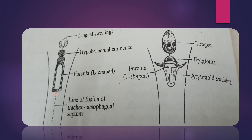In the development of the larynx, the inverted U-shaped furcula plays a major role. This inverted U-shaped slit-like structure lies in the floor of the pharynx. Towards the cephalic end, a prominence can be seen — that is the hypobronchial eminence, which is derived from the fourth arch. On either side of this furcula, two lateral folds are getting into array, and these are derived from the sixth arch.